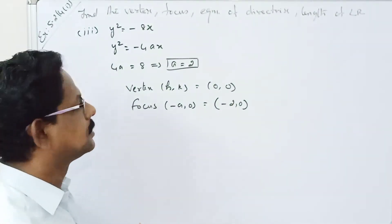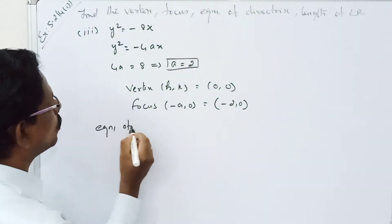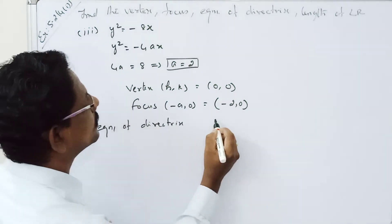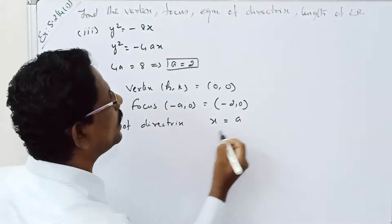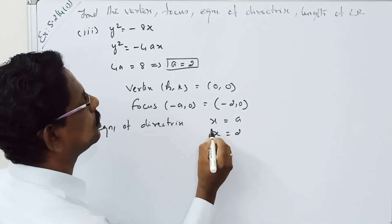Then, the equation of directrix. x is equal to a, so x is equal to 2.